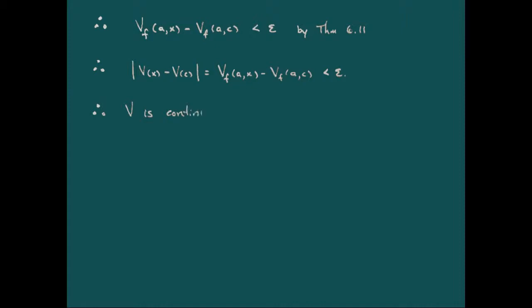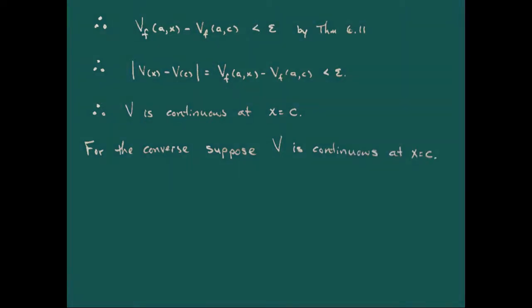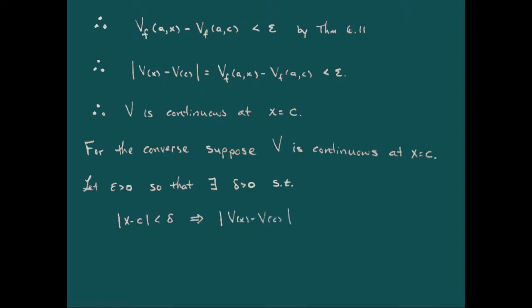That gets us about halfway there. Now let's do the converse: f continuous implies v continuous — we've shown that. Now suppose v is continuous; we want to show f is continuous. So pick epsilon greater than zero. Then there exists delta greater than zero such that if |x − c| is less than delta, then |v(x) − v(c)| is less than epsilon.